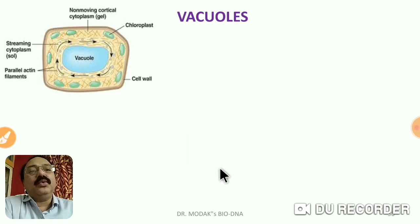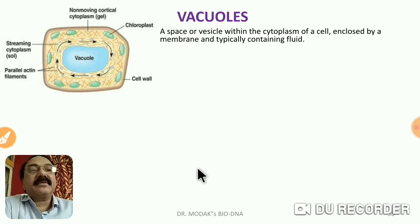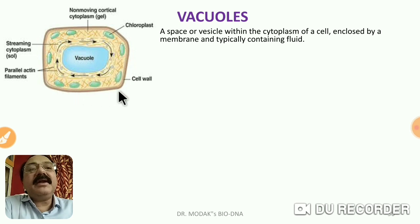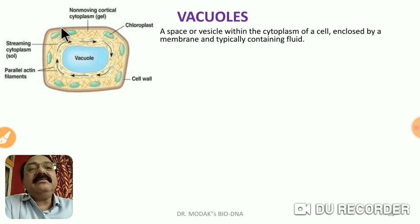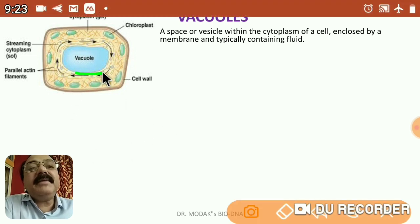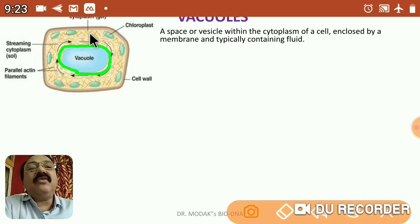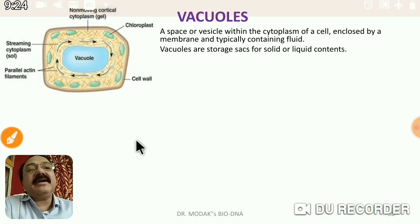Now let us learn another important cell organelle — the vacuole, which is especially present in plant cells. A vacuole is a space or vesicle within the cytoplasm of the cell. The most important feature is that it is enclosed by a semi-permeable membrane called the tonoplast. This tonoplast is a unit membrane and a semi-permeable membrane that allows certain materials to go in and out.